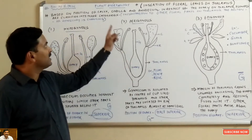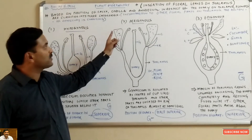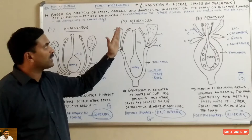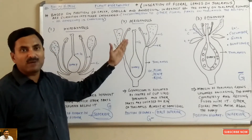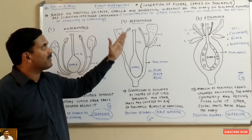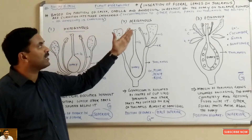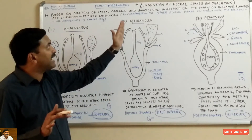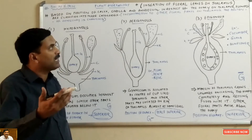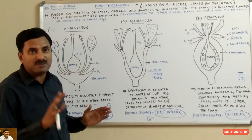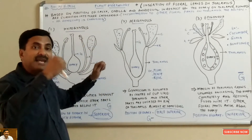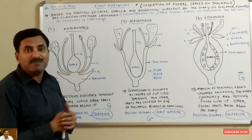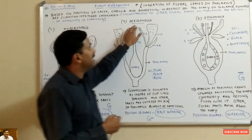Welcome students. Today we are going to study a topic related to plant morphology known as the insertion of floral leaves on the thalamus. As we know, there are four whorls in a flower: calyx, corolla, androecium, and gynoecium. Based on the position of the calyx, corolla, and androecium in respect of the ovary on the thalamus, flowers are categorized into three types: hypogynous, perigynous, and epigynous.